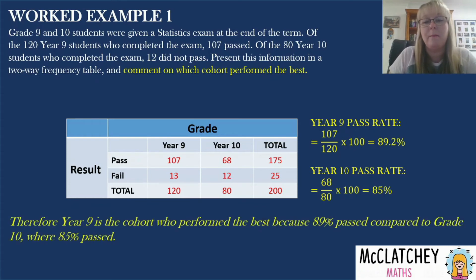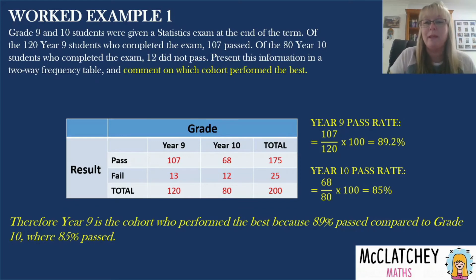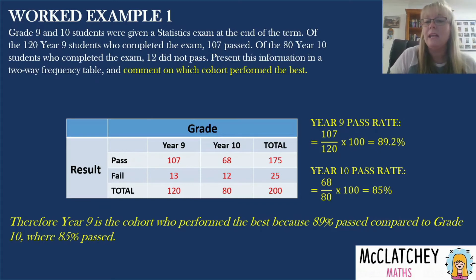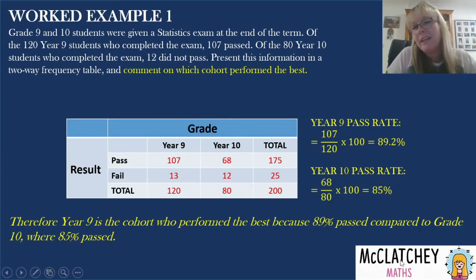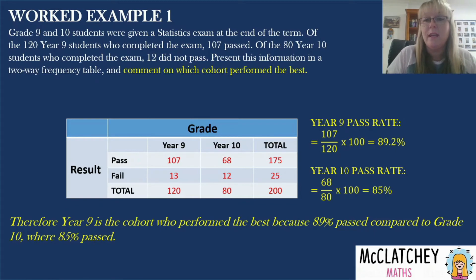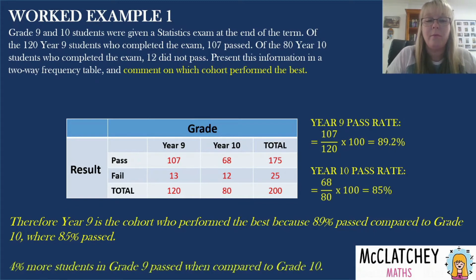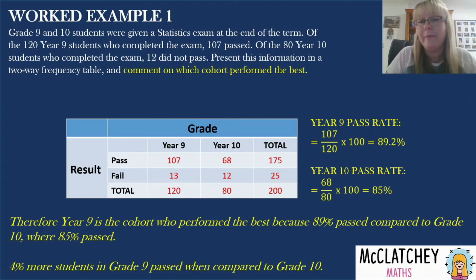I'm going to write a statement and give a reason — you can't just say 'Year 9 performed the best' without justification, as most teachers won't give you full marks for that. So I need to give a reason: 89% compared to 85% who passed in Grade 10. I could take it a step further and work out the difference in pass rates — for example, 4% more students in Grade 9 passed when compared to Grade 10. That's a full-marks answer.